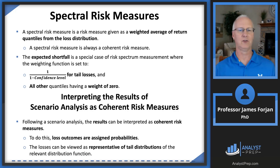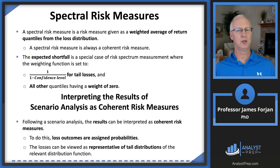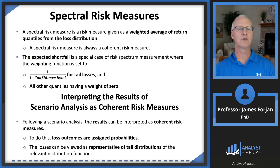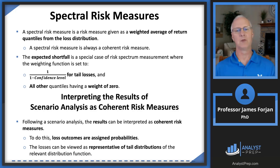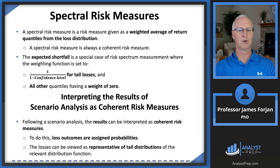We've learned about the problems of assigning equal weights. The spectral risk measure gives us a different weighting function. All other quantiles have a weight of zero, but for those tail losses we set the weight equal to one divided by one minus the confidence level. The last learning objective covers scenario analysis — results from a Monte Carlo simulation, as discussed in the last chapter, can be interpreted as a coherent risk measure.